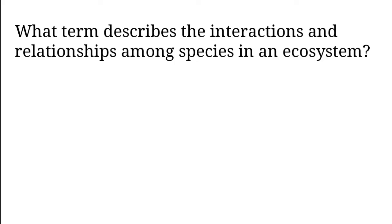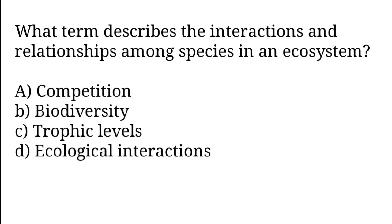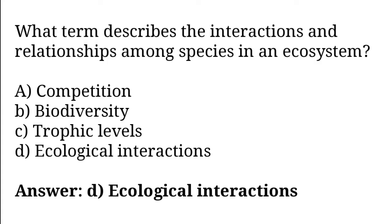What term describes the interaction and relationships among species in an ecosystem? Options: Competition, biodiversity, trophic levels, ecological interactions. So the correct answer is option D. Ecological interactions describes the interaction and relationships among species in an ecosystem.